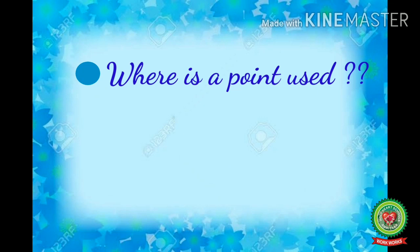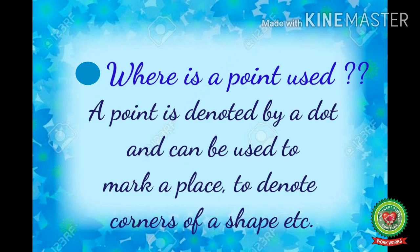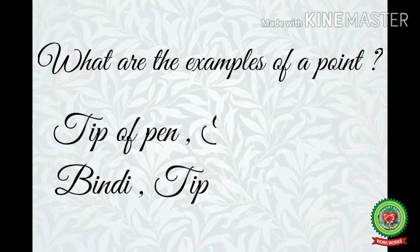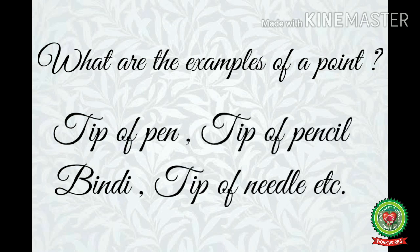Now we will learn where a point is used. Children, a point is always denoted by a dot and can be used to mark a place, to denote corners of a shape, etc. It can be used for many other things. What are the examples of a point? Point is just like a dot. So tip of pen, tip of pencil, bindi, tip of needle, etc. are few examples of point.